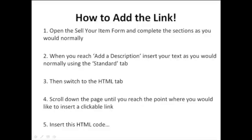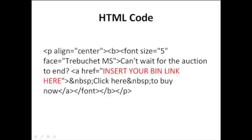I'll give you a live example in just a moment so you can see exactly where these tabs are. Then scroll down the page until you reach the point in your description where you'd like to insert a clickable link. Once you've reached that spot, you put in the HTML code. HTML code can look very confusing — it looks like a load of gobbledygook and is quite difficult to understand. I personally only know a little bit of HTML, just enough to put links within my eBay listings, and that's all you need to know.